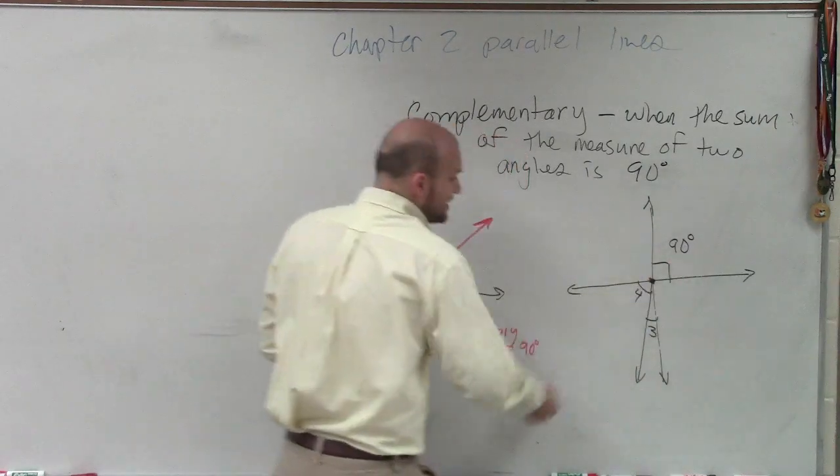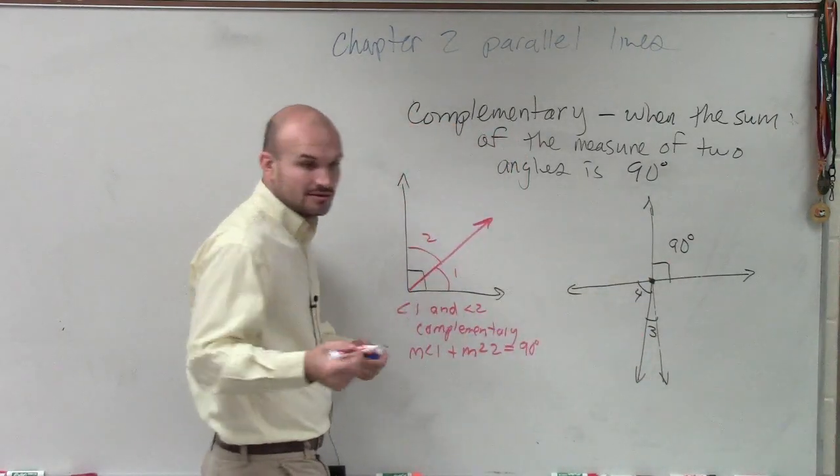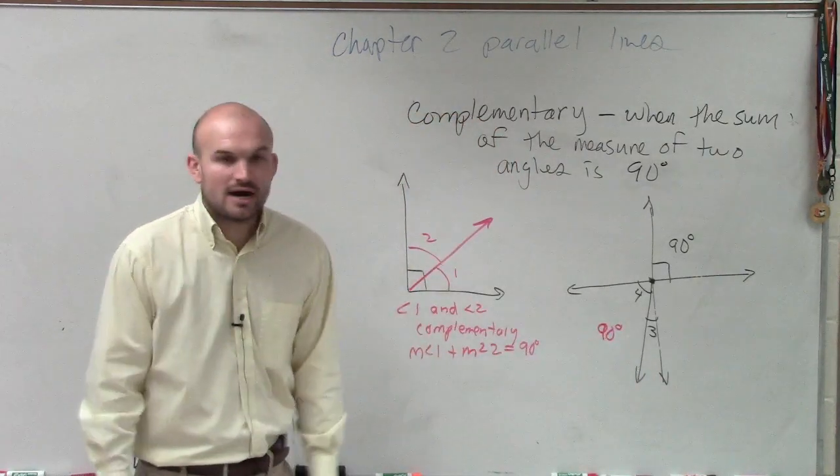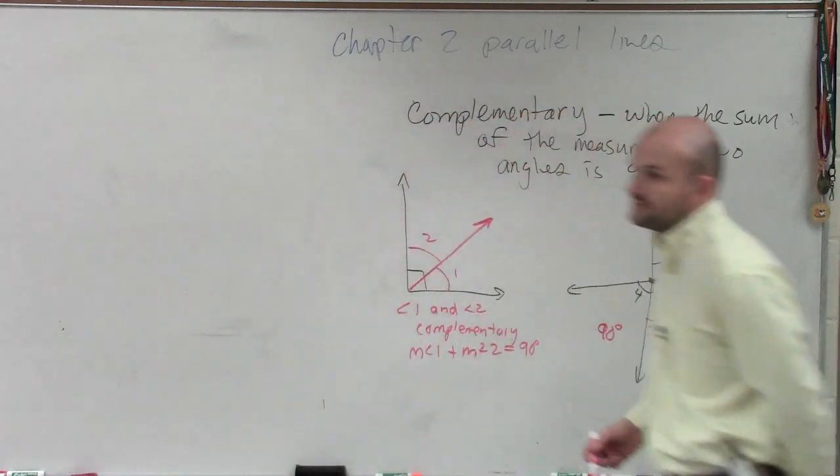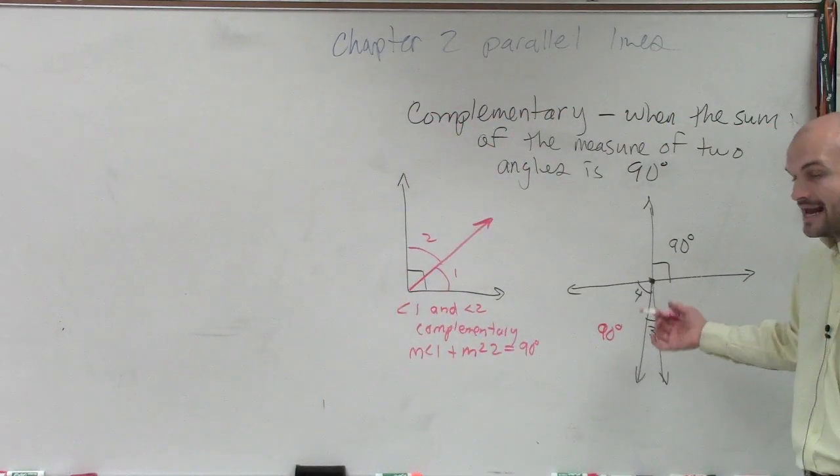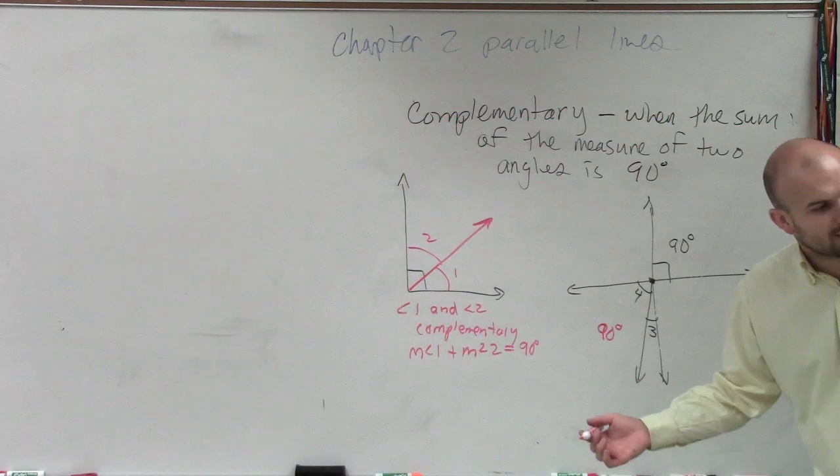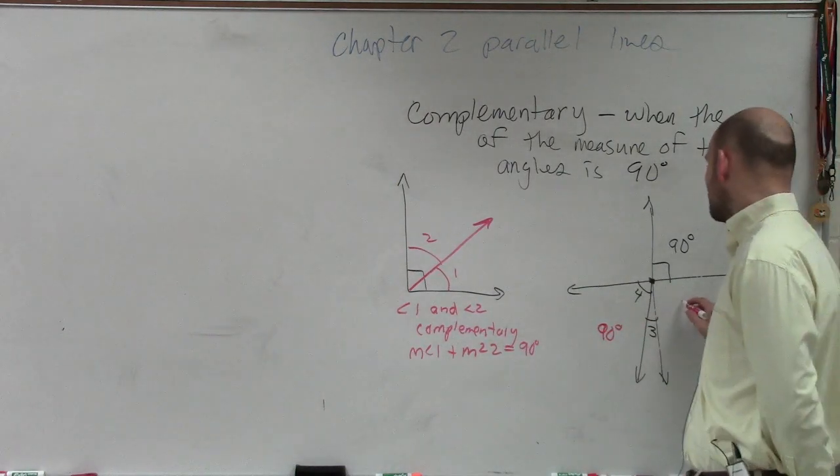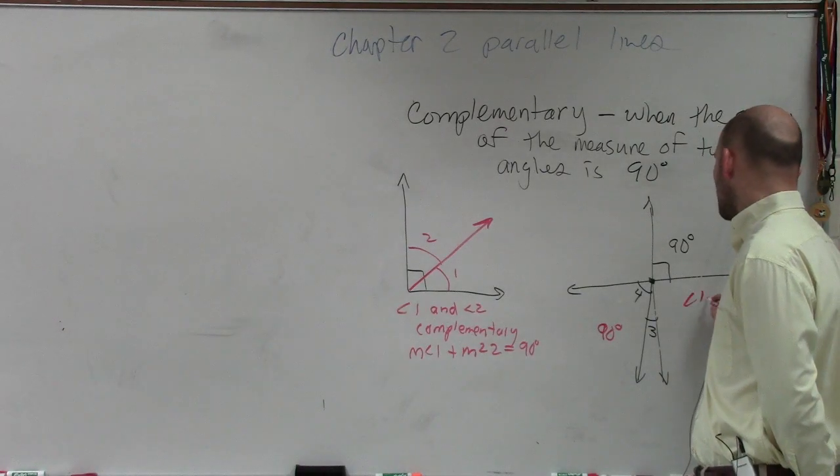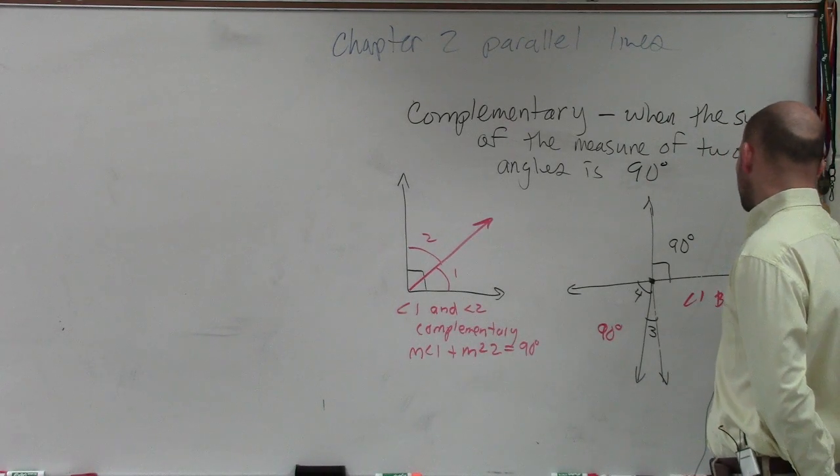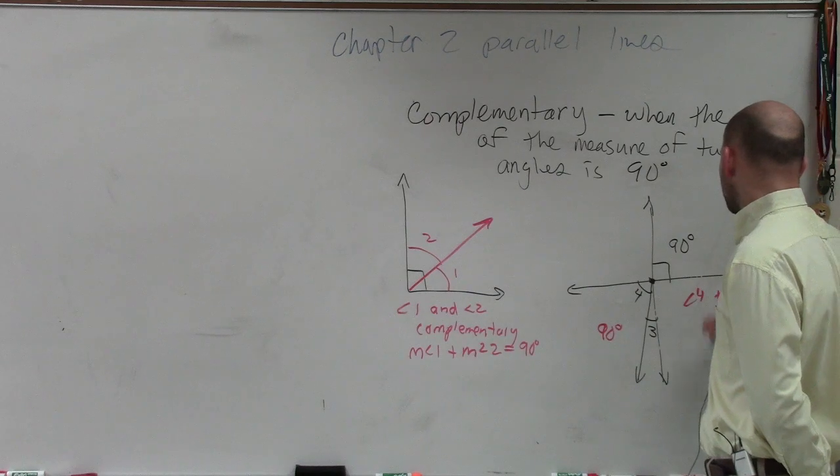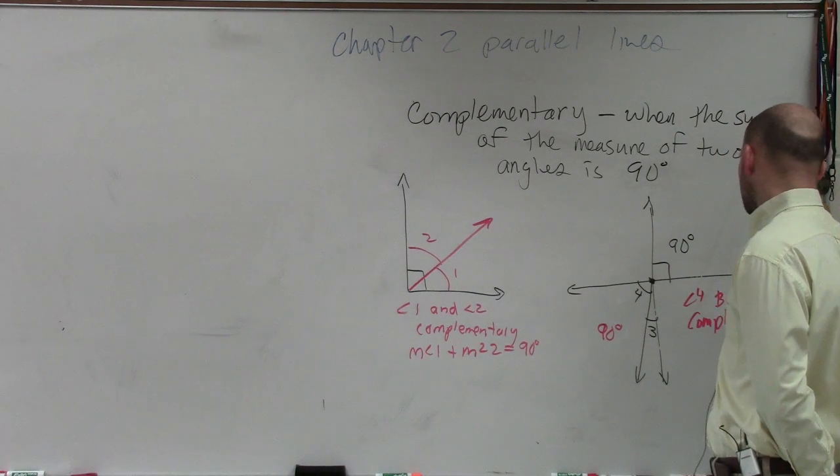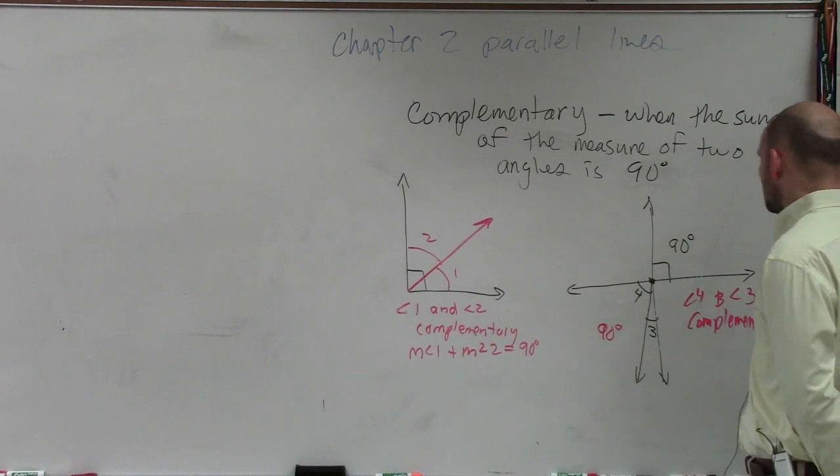So they're not adjacent, but they are vertical angles. Therefore, if this is 90 degrees, how many degrees is this? 90. So is angle 3 plus angle 4 equal to 90? Yes. Are angle 3 and angle 4 complementary angles? Yes, they are. You can also say that angle 4 and angle 3 are complementary.